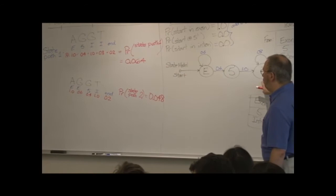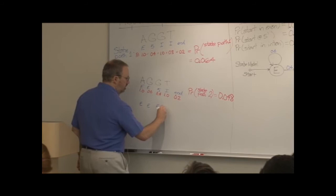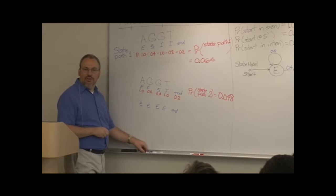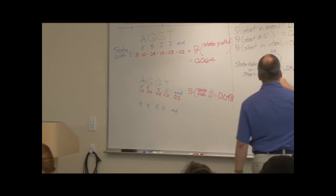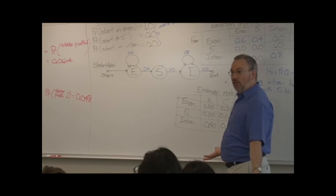some of them make no sense at all. So what would be, for instance, the probability of getting E, E, E, E, end? Why would it be zero? Because this would require us to go directly from the exon to the end. Which has a probability zero. And of course, when that's present in your multiplication, the whole thing comes out to zero.